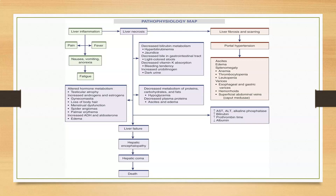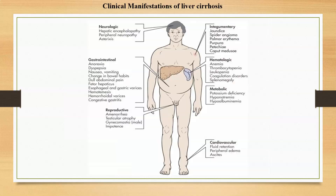Complications can also lead to portal hypertension, causing ascites, edema, splenomegaly, anemia, thrombocytopenia, leukopenia, esophageal and gastric varices, hemorrhoids, and superficial abdominal veins otherwise termed as caput medusae. Laboratory findings show increased alkaline phosphatase, increased bilirubin and prothrombin time, and decreased albumin.